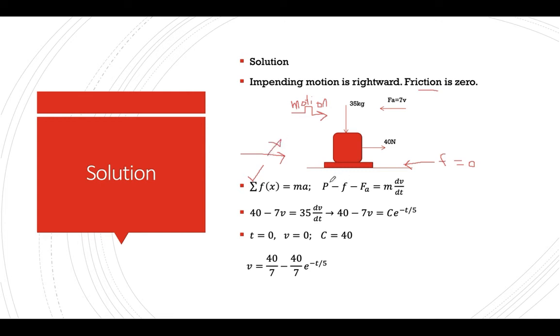So P is positive, F is negative but this is 0. And then the air resistance is also negative. Since we need to get the velocity, we replace the acceleration by dv over dt.